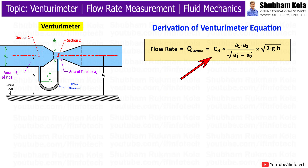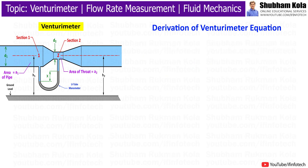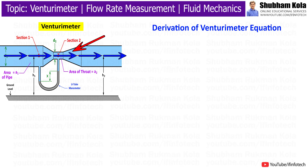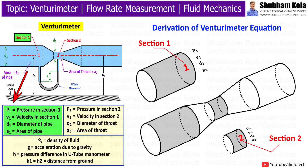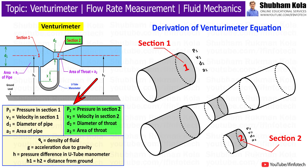Now we will see how to derive this equation. Let's consider a horizontal pipe in which the Venturimeter is fitted and the water is flowing, as you can see in the diagram. P1, V1, D1, and A1 are the corresponding pressure, velocity, diameter, and area at section 1. And P2, V2, D2, and A2 are the corresponding values at section 2.